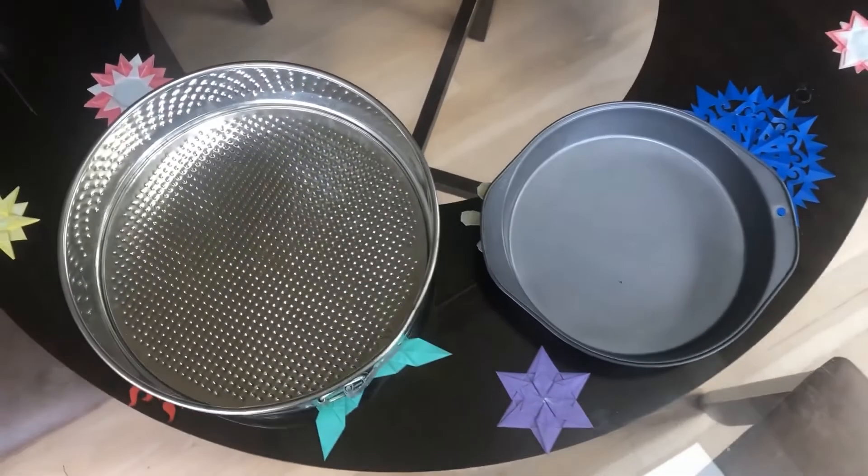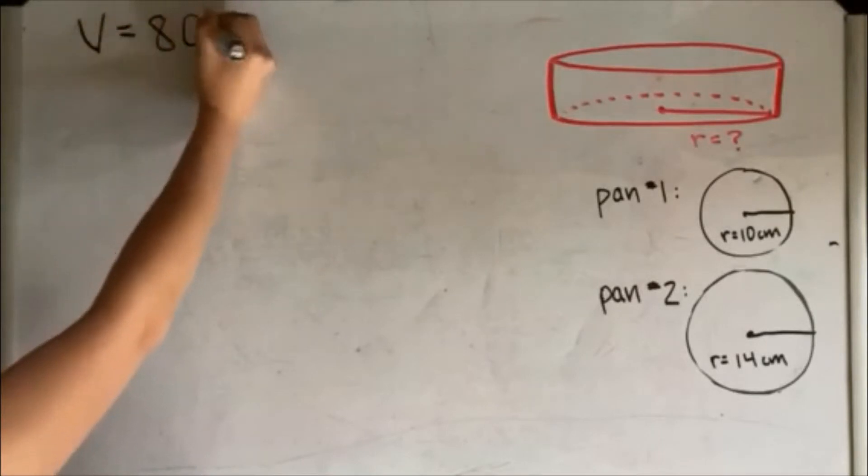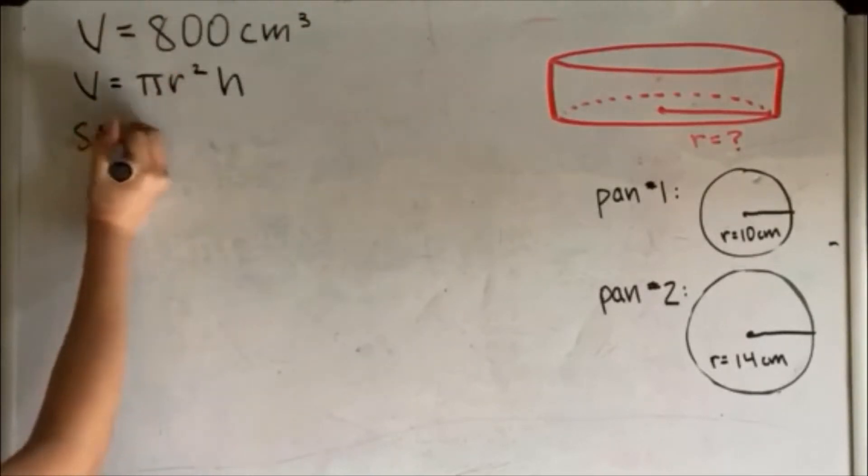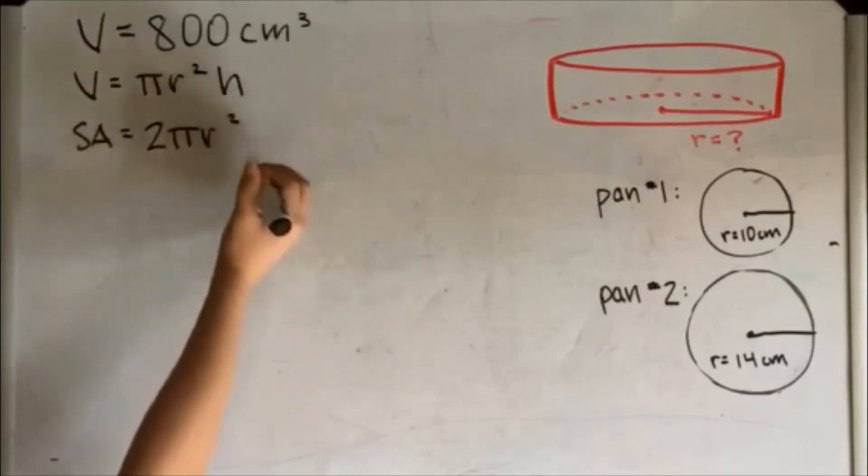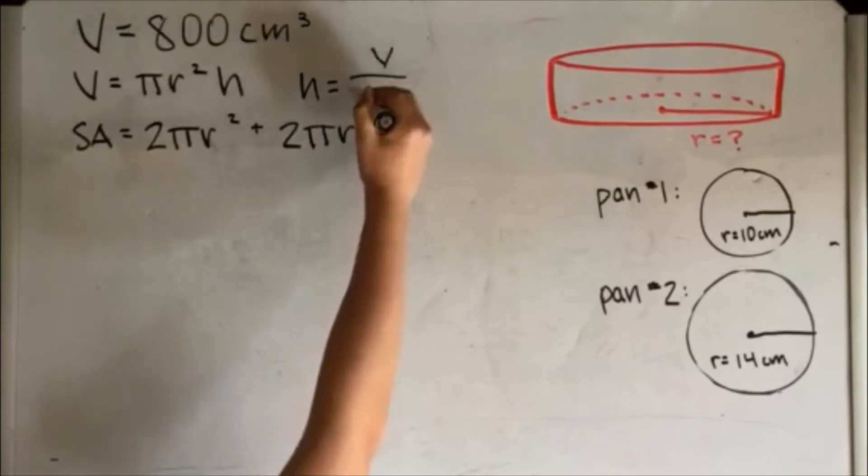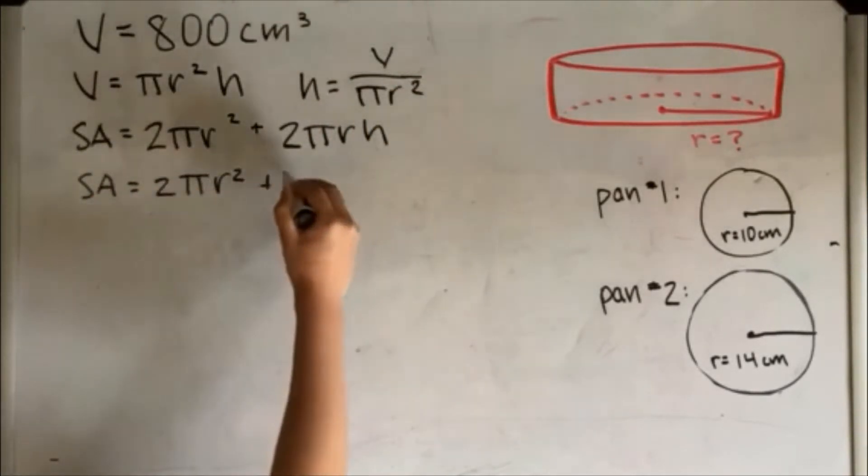Well, let me show you. Here are my two pans with radii 10 cm and 14 cm. To find the radius that would give the lowest possible surface area of the cake with the given volume of about 800 cm cubed, we can write the cylinder volume and surface area equations in terms of R. We then write H in terms of R using the volume equation and then plug it into the surface area equation of the cylinder.